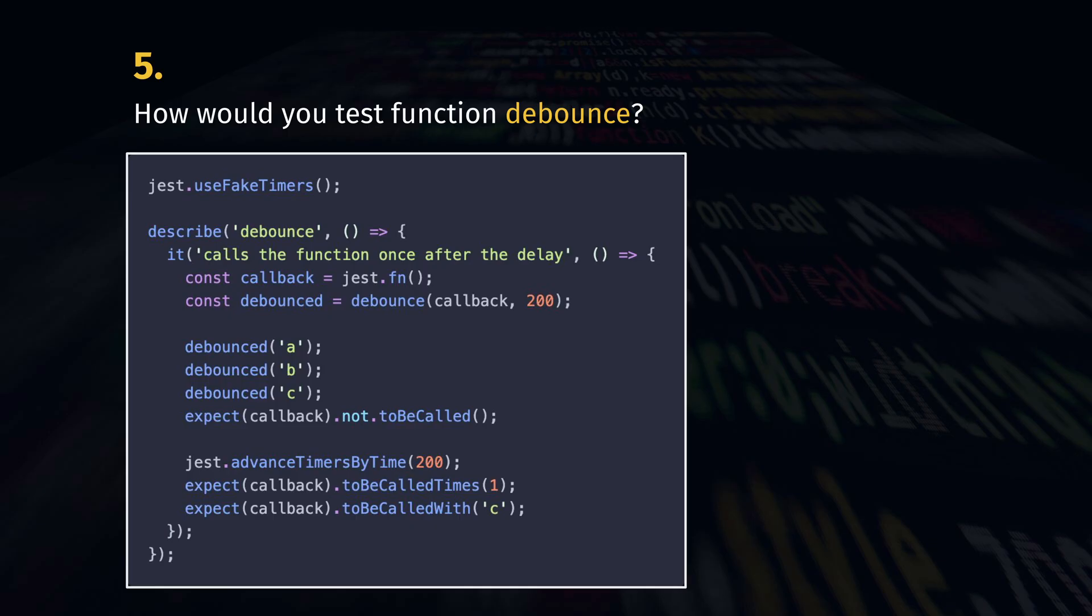In this example, we start by ensuring the callback isn't triggered despite calling the function three times. Then we advance the time and check if the callback was triggered by the last function call.